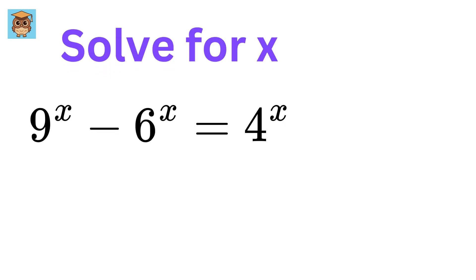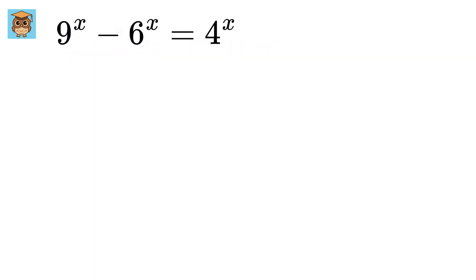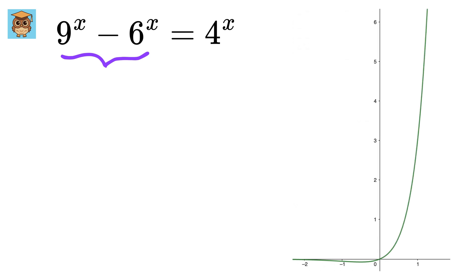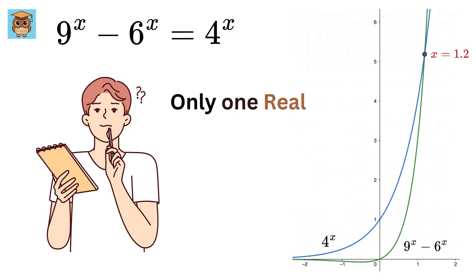We have this scary-looking equation. Can you find all the real values of x? Before we start, let us look at the graph of 9 to the power of x minus 6 raised to the power of x, which will look like this, and then let us plot 4 to the power of x. We can see that it intersects at one point only, which is near 1.2. But is it true that it has only one real solution? And can we find that point algebraically?